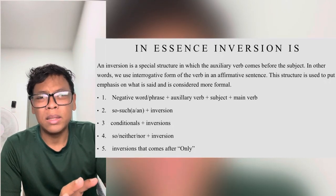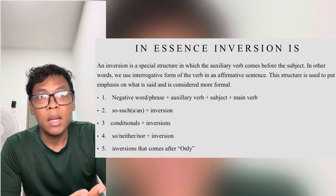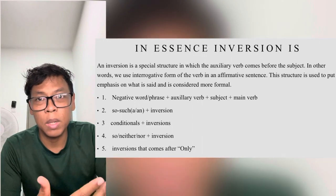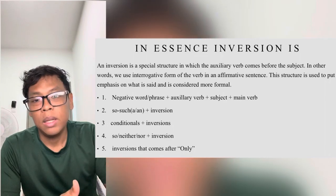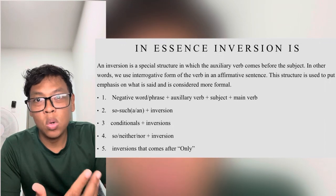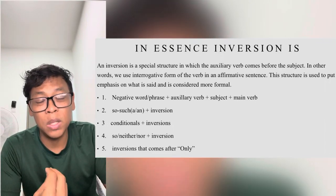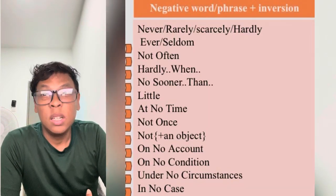These are the types of inversion: first, negative words or phrases plus auxiliary verb plus subject plus main verb, forming an interrogative form. Second, 'so/such' plus inversion. Third, conditional plus inversion. Fourth, 'so/neither/nor' plus inversion. And the last one is inversion that comes after 'only' or 'not until.'